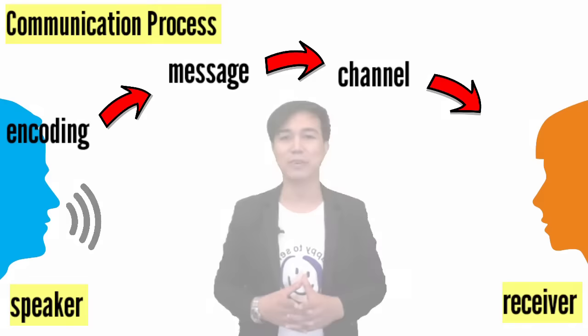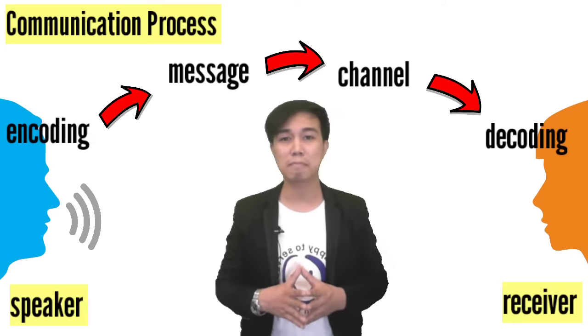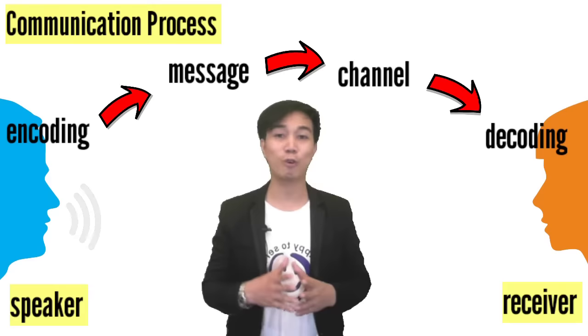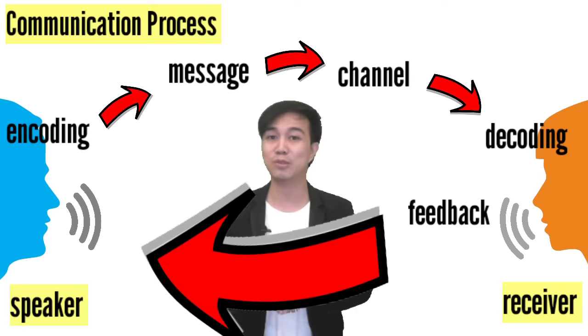Next in line is the listener, also known as the receiver. The receiver decodes the message. Decoding means understanding and interpreting the encoded message given or sent by the speaker. When the receiver decodes the message, he or she can now make a response, also known as feedback. Feedbacks are reactions, responses, or any information provided by the receiver, and it can be sent through different channels.